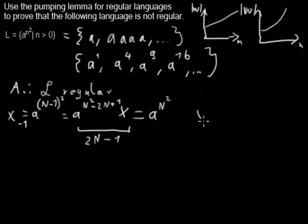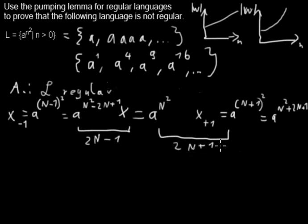Now if I look at the next word after that, let's call it x plus 1, then it will have the length of a to the power of n plus 1 squared. And if I multiply this out it will be a to the power of n squared plus 2n plus 1. And if you look now at the distance between these two words, I would need to add 2n plus 1 letters to this word. So now when I go to the formal stuff, I need a separation.